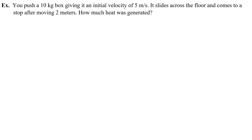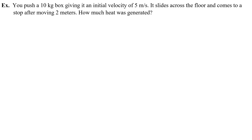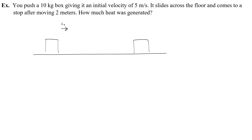Here is a classy little example. Let's say you push a 10 kilogram box giving it an initial velocity of 5 meters per second. It slides across the floor and comes to a stop after moving 2 meters — how much heat was generated? Well, in this case the box moves across the floor with an initial velocity and eventually comes to a stop. At the end you would have no kinetic energy because it's not moving. At the beginning you would have some initial kinetic energy equal to half the mass — half of 10 kilograms — times the velocity 5 meters per second squared, which gives 125 joules of energy.